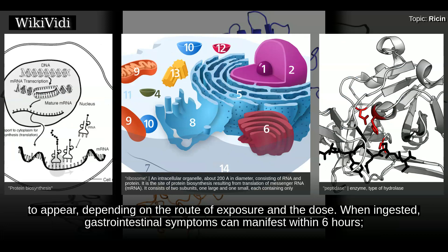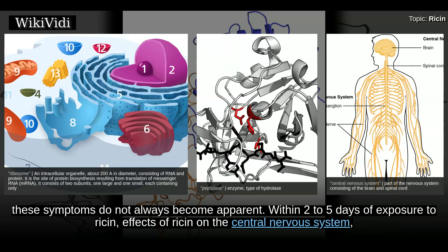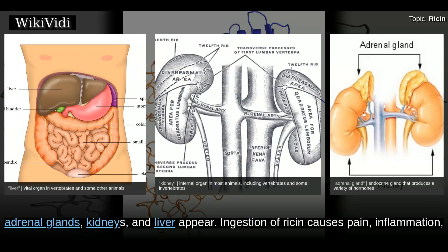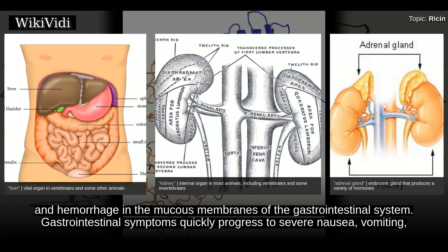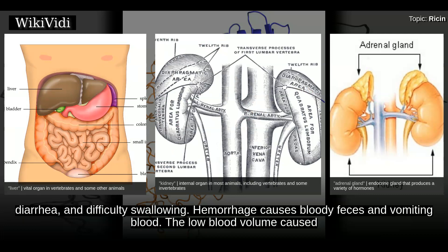When ingested, gastrointestinal symptoms can manifest within six hours. Within two to five days of exposure to ricin, effects on the central nervous system, adrenal glands, kidneys, and liver appear. Ingestion of ricin causes pain, inflammation, and hemorrhage in the mucous membranes of the gastrointestinal system. Gastrointestinal symptoms quickly progress to severe nausea, vomiting, diarrhea, and difficulty swallowing. Hemorrhage causes bloody feces and vomiting of blood.